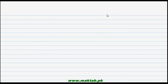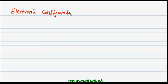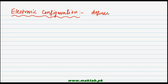اب ہم reasons پر آتے ہیں — کیوں ایک atom کو compound بنانے کی ضرورت پڑتی ہے؟ Normally جو چیز define کرتی ہے کسی بھی atom کے bond بنانے کی صلاحیت کو، that is its electronic configuration۔ Electronic configuration is basically the arrangement of electrons present in any atom۔ اس کی electronic configuration it basically defines the chemical bonding — کس طرح کی bonding آپ کا atom کرے گا، وہ depend کرے گی اس کی electronic configuration پر۔